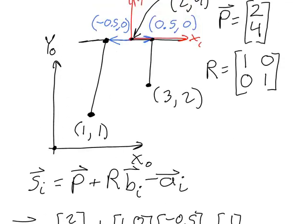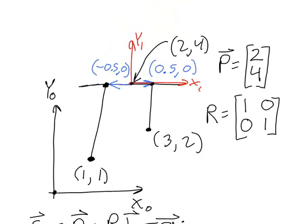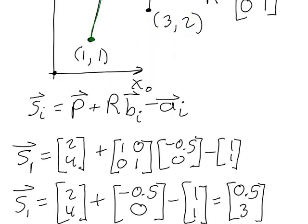Let's look at what that means. 0.5, 3 is the vector from the bottom of this joint up to the top of this joint. It tells us that this vector should be 0.5 over in the x direction and 3 up in the y direction. That makes sense: if we go over 0.5 to get to this point and then over 0.5 again to get to the center, that gives us an x value of 2, which is what we specified. And going up 3 in y from the starting point of 1 gives us a y value of 4, which we also specified. So it looks like we got the correct answer for S1.